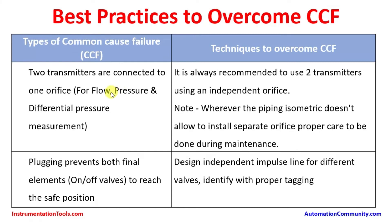Two transmitters connected to one orifice — used for flow, pressure, and differential pressure measurement — can lead to choking affecting both instruments. It is always recommended to use two transmitters with independent orifices. However, if the piping isometric does not allow separate orifices due to space and distance limitations, proper care must be taken during maintenance to isolate the correct instrument.